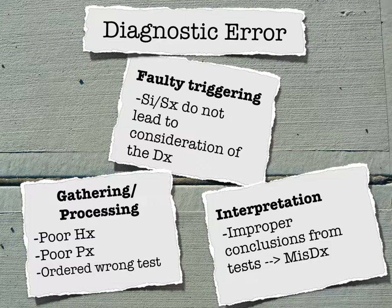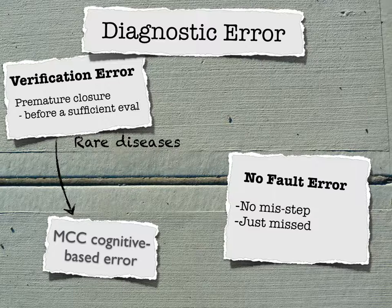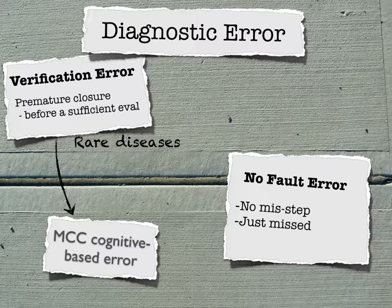Lastly, verification error — basically premature closure before sufficient evaluation. This is the most common cognitive-based error in diagnosing rare diseases. We look to verify what we think the patient had when they first walked in, and we're unwilling to reconsider our diagnoses. There's also the no-fault error — it's just a misdiagnosis. In rare and uncommon diseases, this should be expected, because unless somebody comes in with classic signs and symptoms, the pretest probability in conjunction with an equivocal history and physical means that we should never reach a testing threshold on most of these people, certainly not until they develop more convincing signs and symptoms.